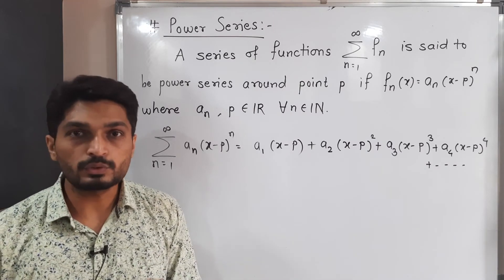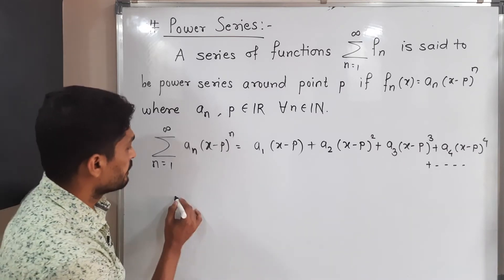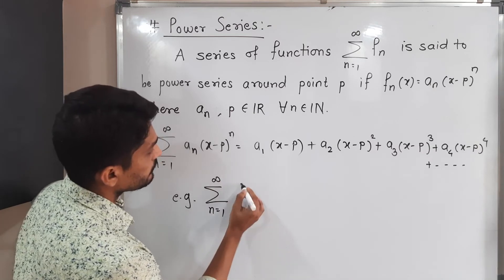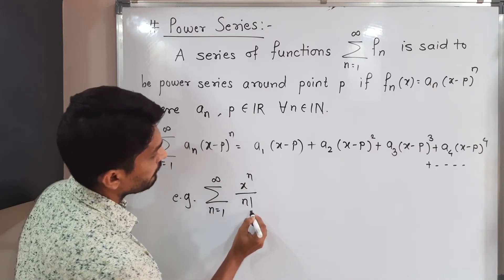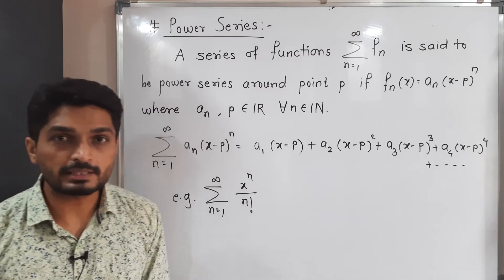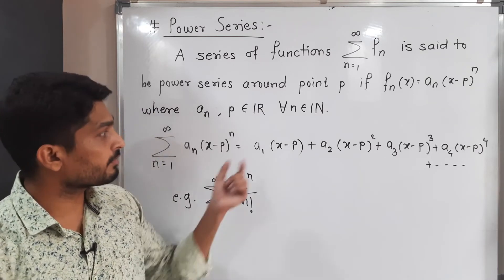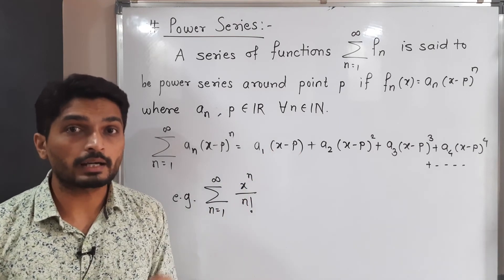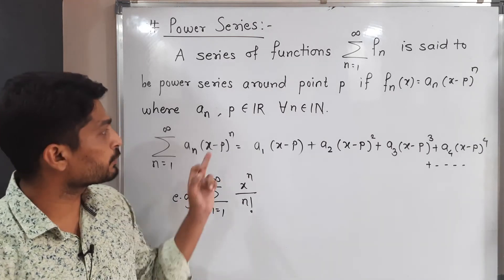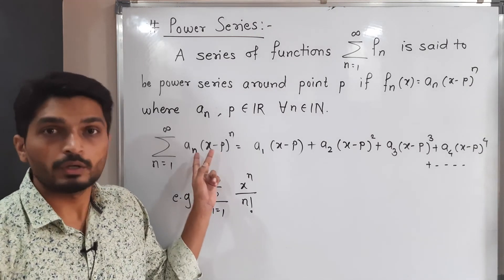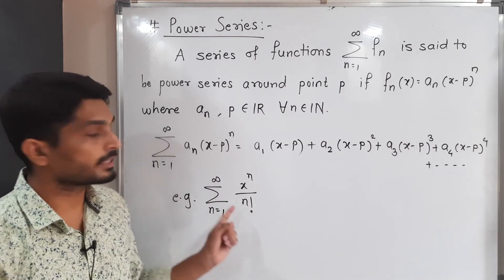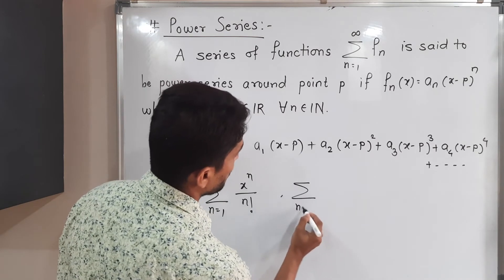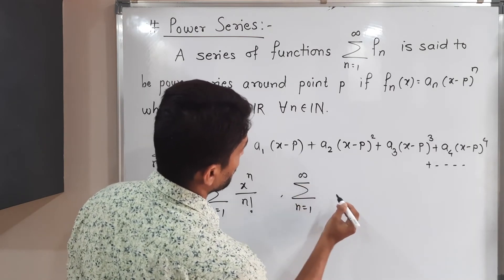Let us discuss a few simple examples. Consider the series summation, n running from one to infinity, of xⁿ divided by n factorial. This is also a power series since x has power n. Instead of having (x minus p), we simply have x, so this is a power series around the point x equal to zero, since if we put p equal to zero we get the same series.